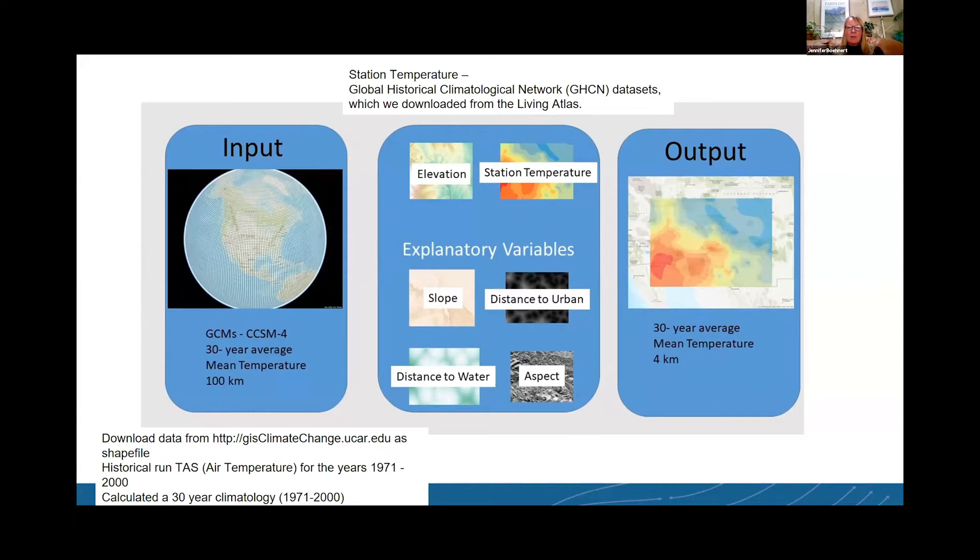We then took that data and we ran it through the EBK regression prediction tool a number of times and we changed up the explanatory variables that we were looking at. We did different combinations of these explanatory variables. The explanatory variables that we looked at were elevation, slope, distance to water. We computed from aspect, eastness, and northness. We did distance to urban and we did station temperature information.